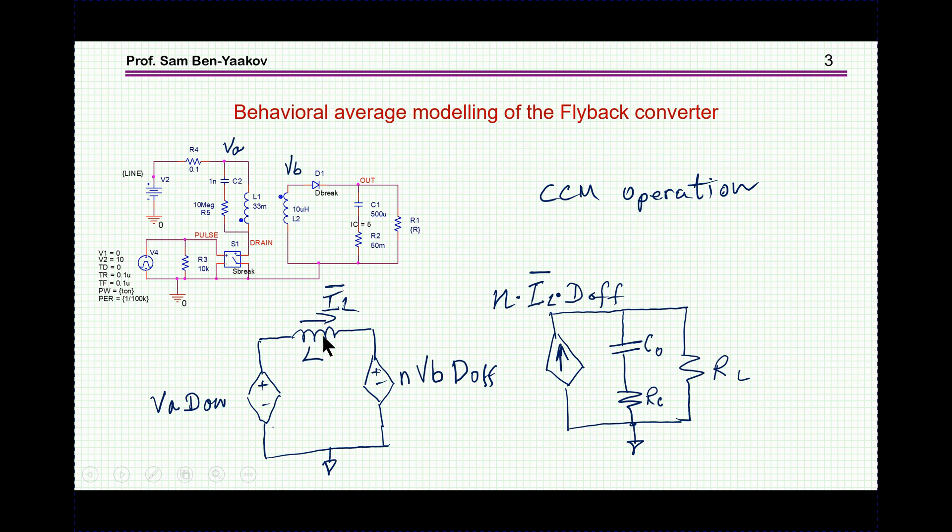So here is the primary, and I'm starting with the average voltage on this primary. When the transistor is on, there is the input during the on. So the average voltage on this side is VA times DON, and the average voltage on the other side is N times, because of the reflection, VB, this is the voltage here, times DOFF. So this is a generic representation of a PWM converter inductor.